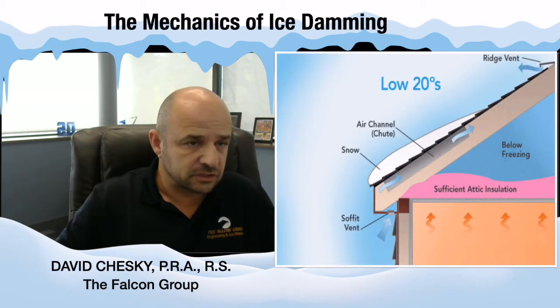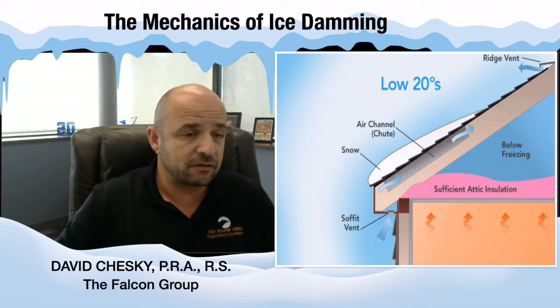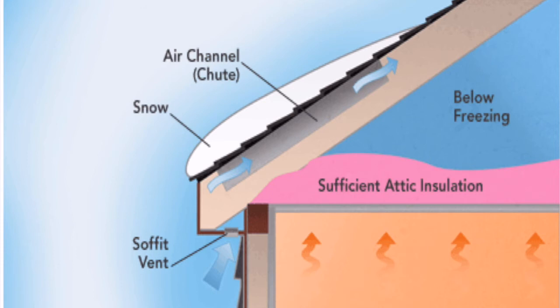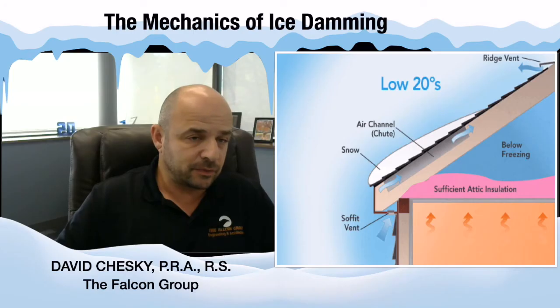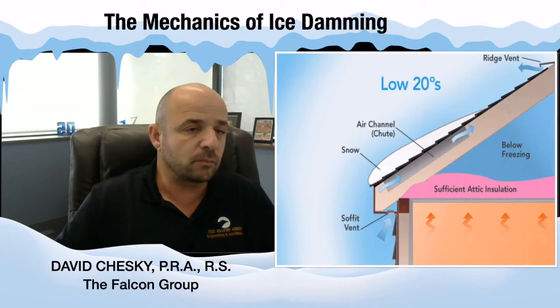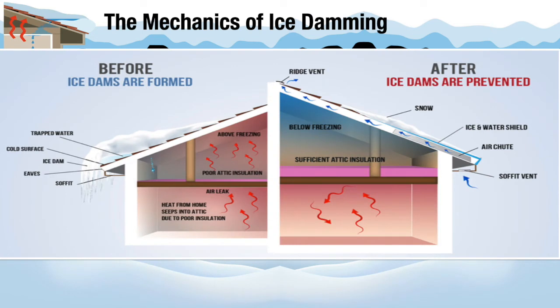Really the goal is to make sure the attic is properly ventilated. The illustration really sums up the conditions you want to see in an attic: sufficient attic insulation, and below the insulation you see the orange arrows representing heat from the living space. The goal is to keep that heat in the living space and not in the attic, keeping the attic space itself as close to the same temperature as outside as possible, reducing the likelihood that the snow sitting on the roof will melt.